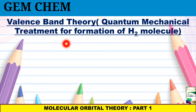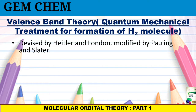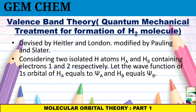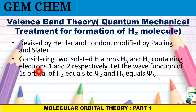The first concept is valence bond theory, which is a quantum mechanical treatment for the formation of the hydrogen molecule. This was devised by Heitler and London and later modified by Pauling and Slater. The consideration is that we take two isolated hydrogen atoms — HA and HB — containing electrons named number one and number two respectively. The wave function of the 1s orbital of HA is taken as ξA, and for HB it is ξB.